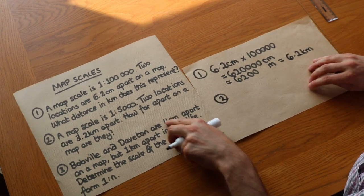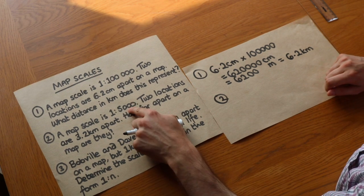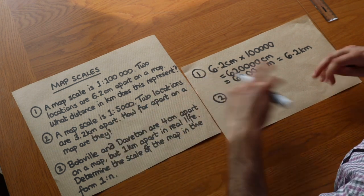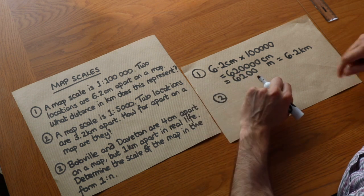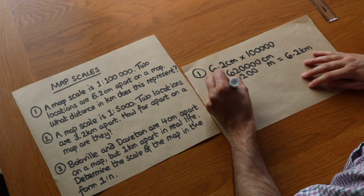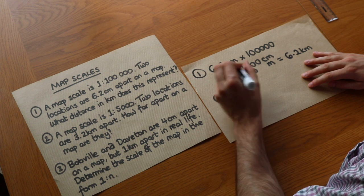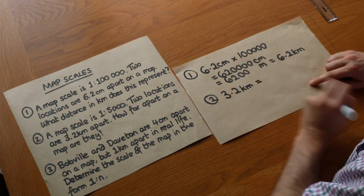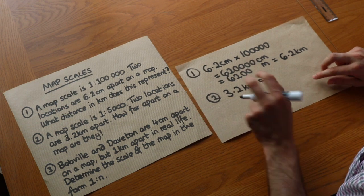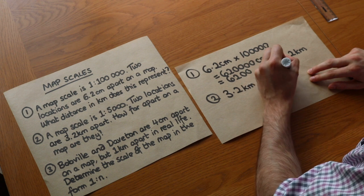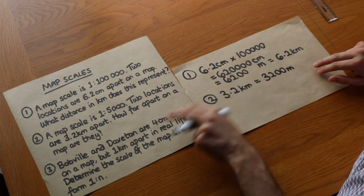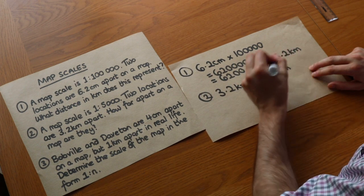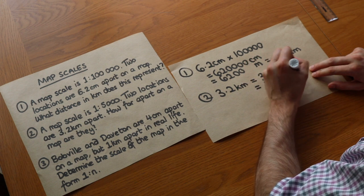What about the second question? A map scale is 1 to 5,000, so real life is 5,000 times bigger than our map. Two locations are 3.2 kilometers apart, so this time we've got the real life distance. How far apart on the map are they? Let's firstly convert this 3.2 kilometers into centimeters. We know that a kilometer is a thousand meters, so we times it by thousand, we get 3,200 meters. Then in centimeters we times it by a hundred to get from meters to centimeters, we put two extra zeros on the end.